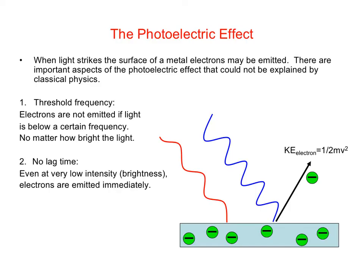If we shine really dim light on the surface, it should take time for the electrons to sort of build up absorbing enough energy for the electrons to be ejected. And that's not what happens. As soon as you turn the light on, no matter how dim it was, as long as you were above the threshold frequency, you immediately got electrons ejected.